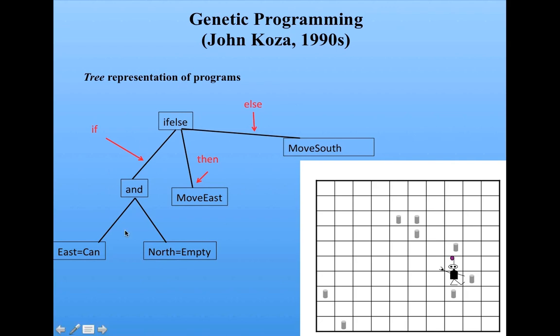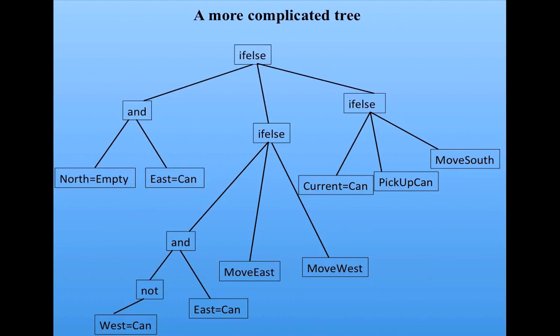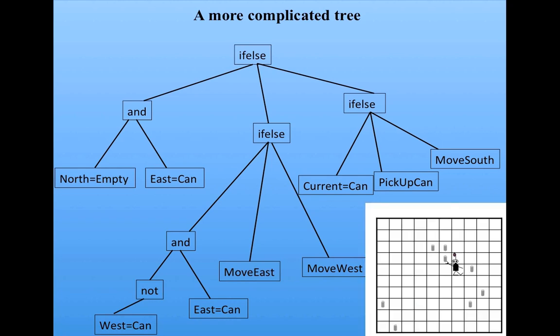Obviously, this tree is way too simple to be a good strategy, because it doesn't involve picking up any cans. Consider this more complicated strategy, which is represented as a longer tree. This is getting harder to make sense of, but we can have Robby follow this strategy.